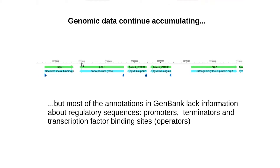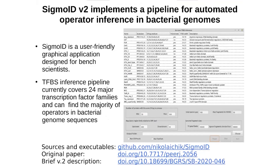There is a lack of information about regulatory sequences such as promoters, transcription factor binding sites, and terminators. The core of the SIGMO application is the de novo operator motifs inference pipeline implemented in a user-friendly graphical interface. Currently, it covers motif discovery for 24 major bacterial transcription factor families. Sources and executables of the application are available via the link on the slide.